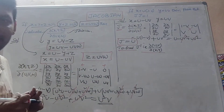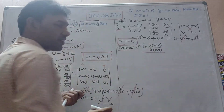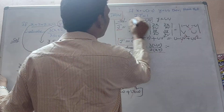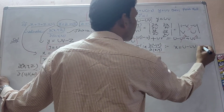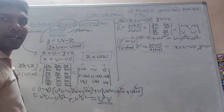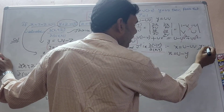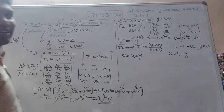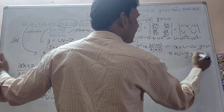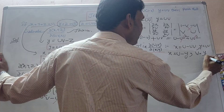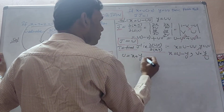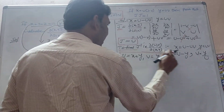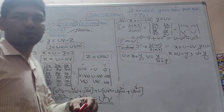Now we evaluate J-prime equals ∂(u,v)/∂(x,y) to find the inverse Jacobian. Given u equals x plus y and v equals y divided by (x plus y), we express these as functions of x and y and set up the 2×2 Jacobian matrix with entries ∂u/∂x, ∂u/∂y, ∂v/∂x, ∂v/∂y.